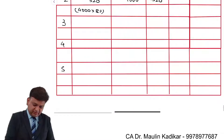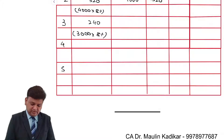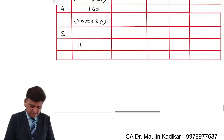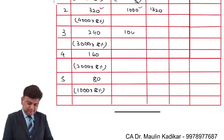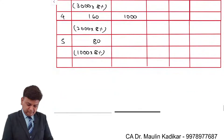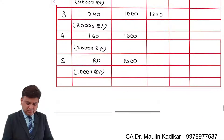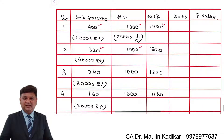In the third year it will be 3000 into 8%, which comes to 240. In the fourth year, 2000 into 8%, which comes to 160. In the fifth year, 1000 into 8%, which comes to 80. Every year the redemption value is 1000. So the cash flows are: Year 3 = 1240, Year 4 = 1160, Year 5 = 1080. These will be discounted at 6%.